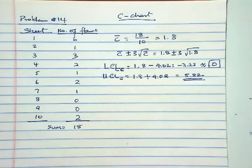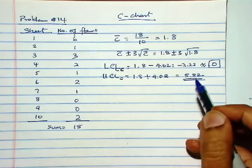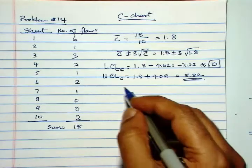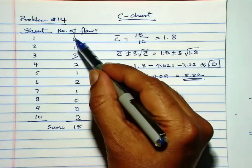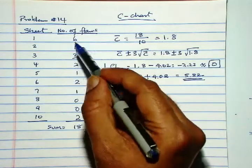Now if you compare, we will skip plotting the values. So if you compare these two limits with the number of flaws, when you see sheet number 1...